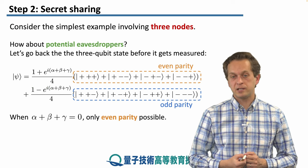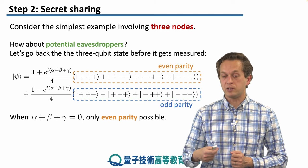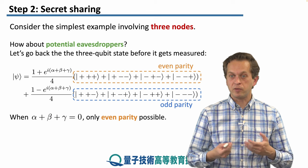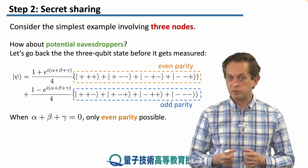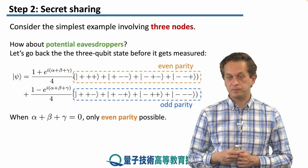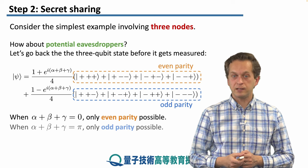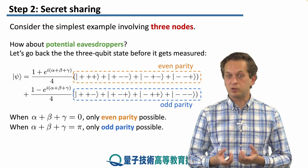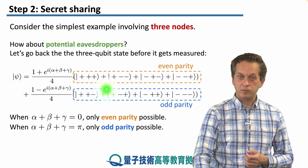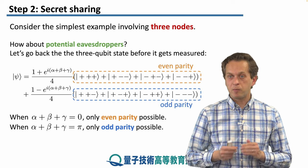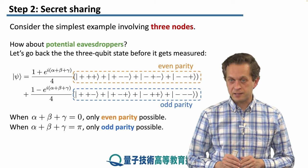So when the sum of the phases α, β, γ is equal to zero, only even parity measurements are possible. So the measurements, when the measurement outcomes when we multiply them, will always give a +1. On the other hand, when we sum α, β, γ together and they are equal to π, then only the bottom case is possible. Only odd parity is possible.